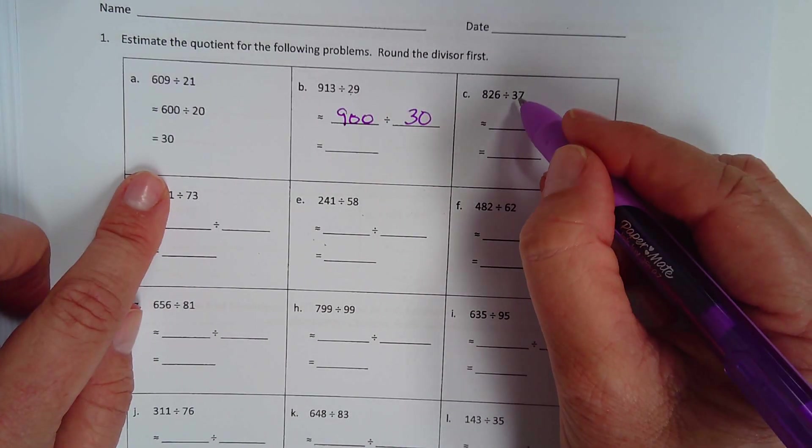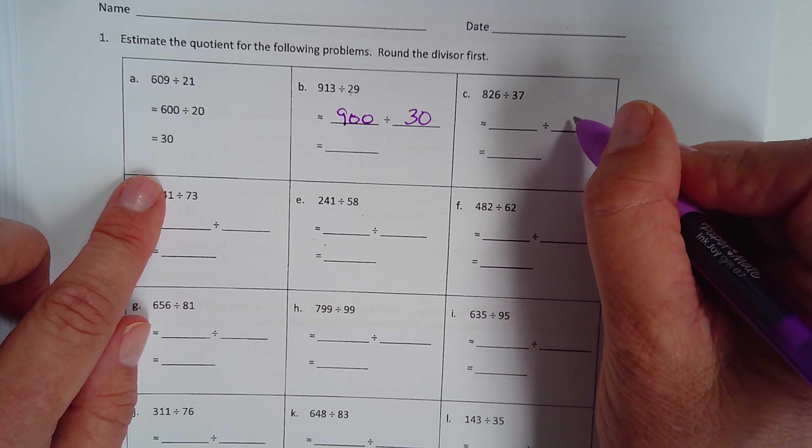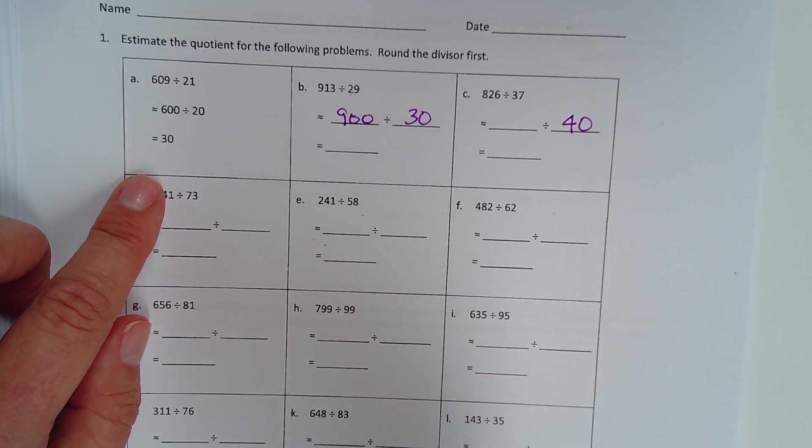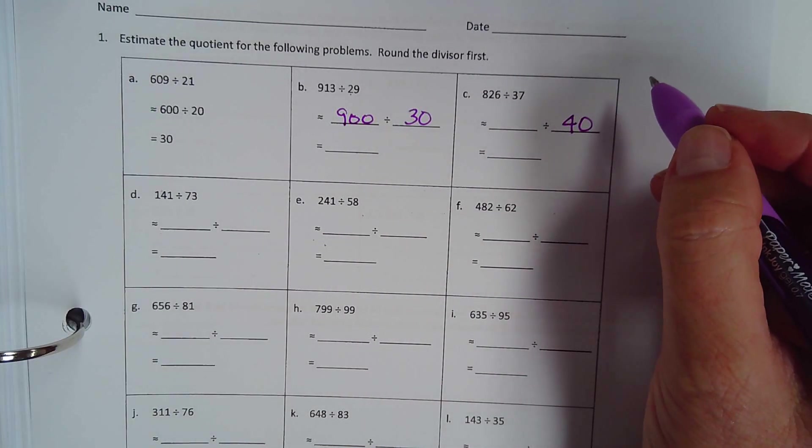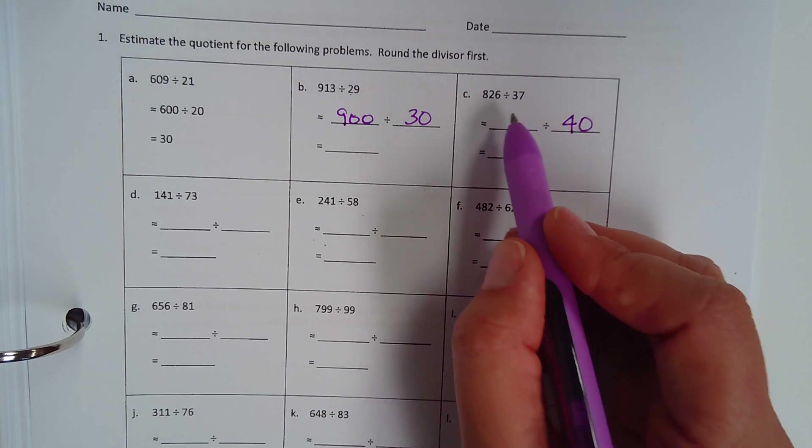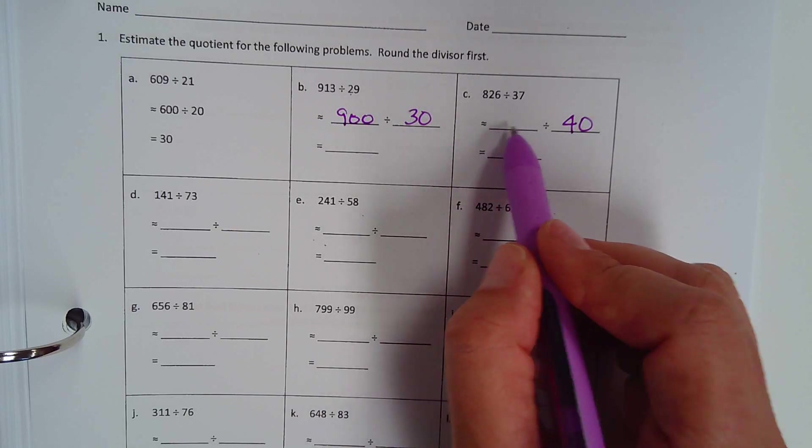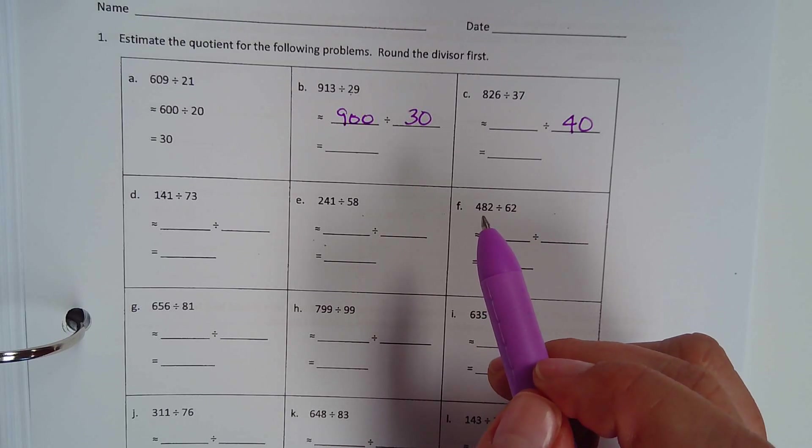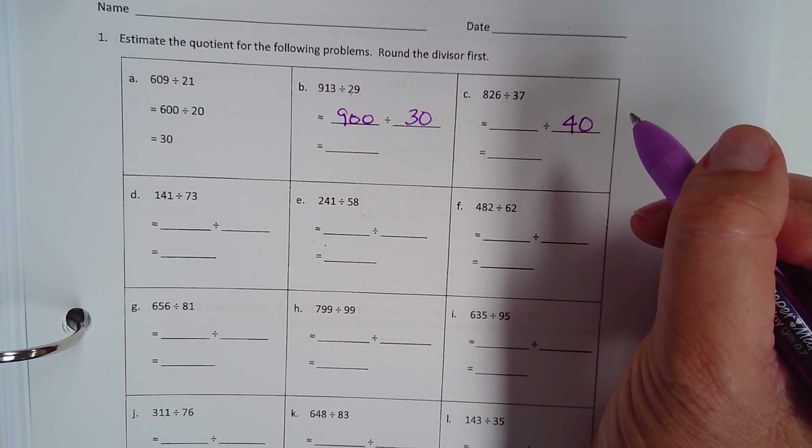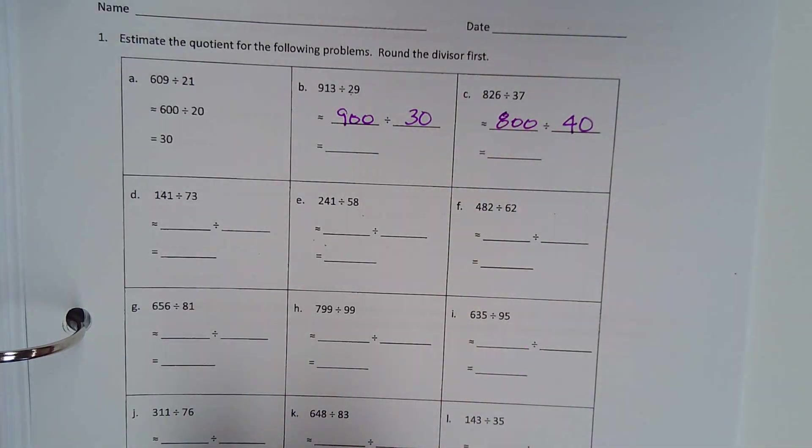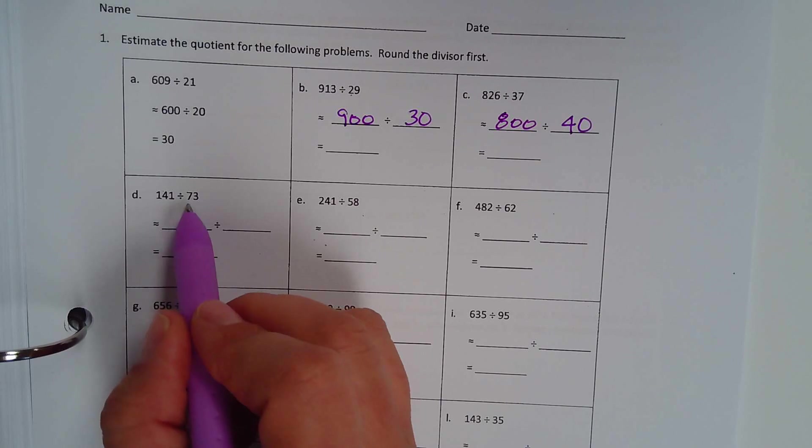All right. Over here. 37. 37 would make sense to round to? 40. Okay. Now, think of those 10s. So if I have four 10s, eight 10s, 12 10s, right? So I want you to think that way. So 826. What would be really easy to divide 40 into? 800. Right?